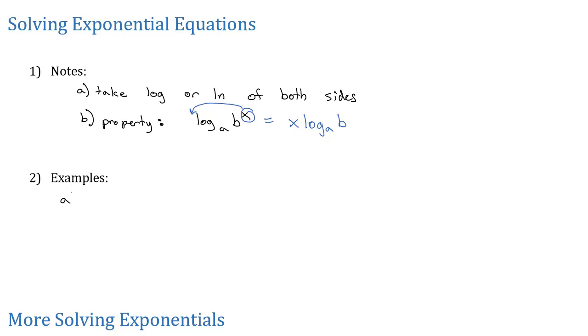Let's look at some examples starting with solving 2 to the W equals 1432. Let's use ln on this first one. We can use log or ln - they both do the same thing. By taking the ln of both sides, that's going to move the exponent out in front giving me W natural log of 2 equals the natural log of 1432.